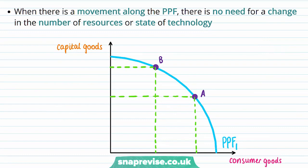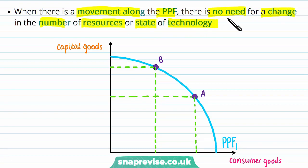With these assumptions, when there is a movement along the PPF curve there is no need for a change in the number of resources or the state of technology. A movement along the curve does not imply that there is a change in the number of resources in our economy or the state of the economy.